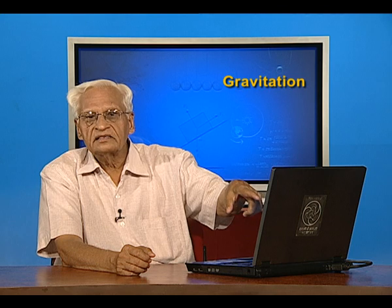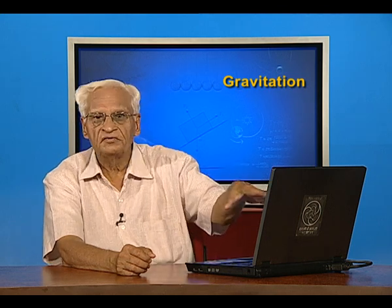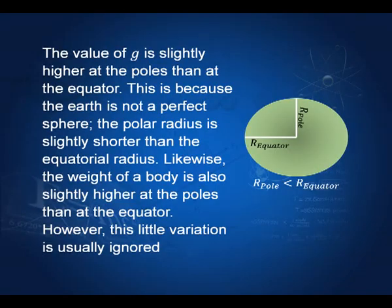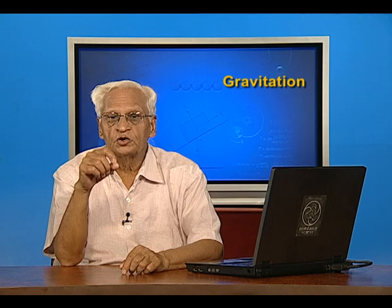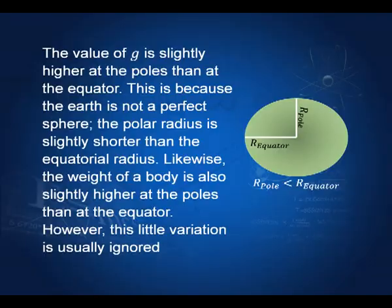The value of g, and therefore the weight, varies from the equator to the pole. The radius of the earth at the poles is slightly shorter than at the equator; therefore, since acceleration due to gravity is proportional to 1 over r squared, g is slightly smaller at the equator than at the poles. As a result, weight at the equator is slightly smaller than at the poles, though the difference is only slight.